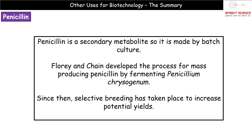The first specific example we need to know is penicillin. Penicillin is a secondary metabolite, so we produce it in batch culture. Going back to GCSE history, Florey and Chain were two scientists who developed a process for mass producing penicillin through fermentation of Penicillium chrysogenum. Since their time, we've tweaked the process and carried out selective breeding on that particular Penicillium in order to increase the yield of penicillin we can get from it — so we've maximized yields through selective breeding.